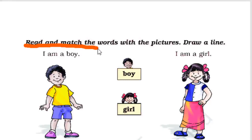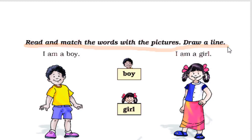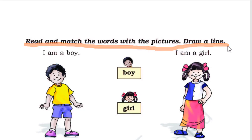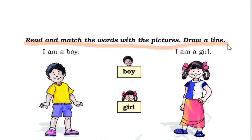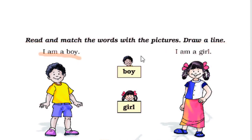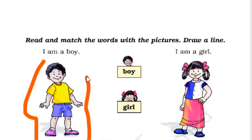The next question is read and match the words with the pictures. Draw a line. In this question we have to match the words given here to the pictures given here. There are also two lines given above the pictures. The first one says I am a boy.